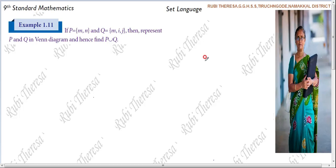Papu, Kanna, listen here. This is Ruby Teresa. Union of sets. I explained the concept. Now let us do the example.